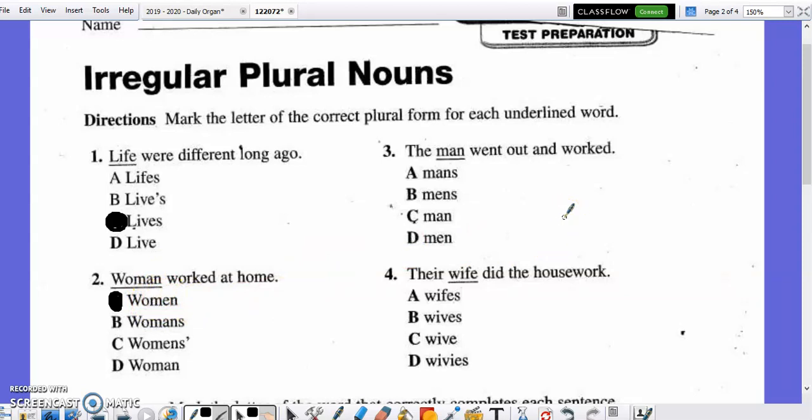Number three, the man went out and worked. What's the irregular plural for one man to many men? A, mans? B, mens? C, man? Or D, men? Mark the correct response now. Similar to woman becoming W-O-M-E-N, man turns into irregular plural men. The answer is D, M-E-N.